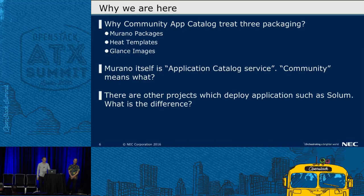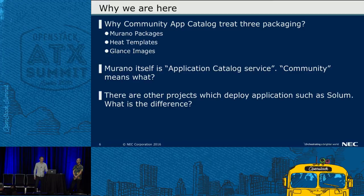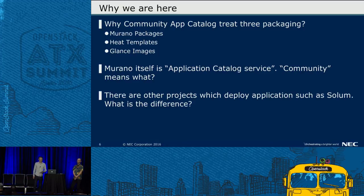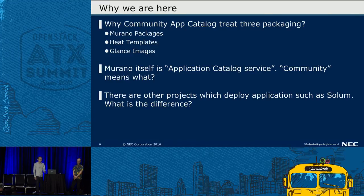While we are here, I happened to attend a Community App Catalog session at Tokyo Summit and had some questions. Why does Community App Catalog have three types of packaging: Murano packages, Heat templates, and Glance images? Murano itself is an application catalog service. What does 'Community' mean? Third, there are other projects which deploy applications such as Solum. What's the difference? So, we are going to talk about which application is suitable for these services.